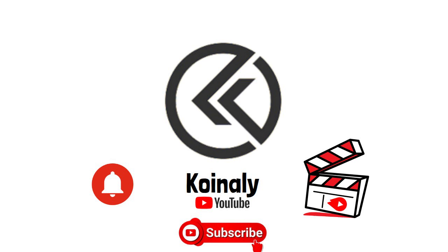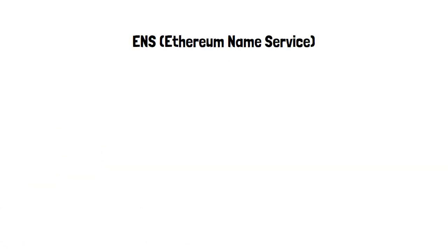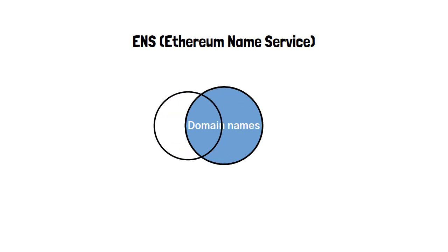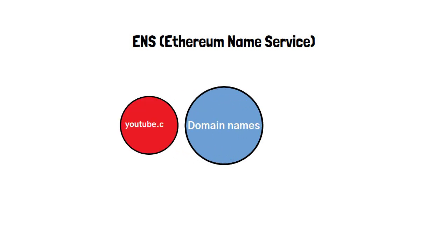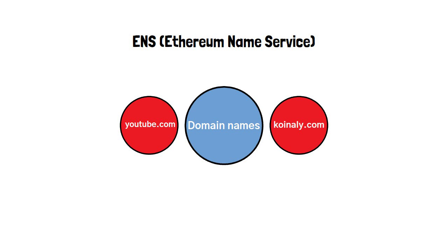Today we are going to discuss about ENS, also known as Ethereum Name Service. You are probably familiar with domain names like YouTube.com and Koinali.com. These domain names have been around for a very long time; however, ENS is here to reshape what we know as domain names.